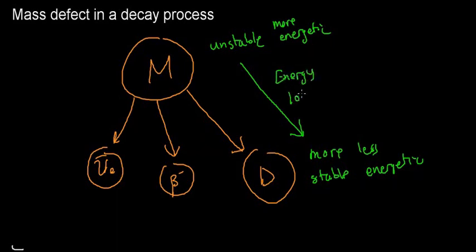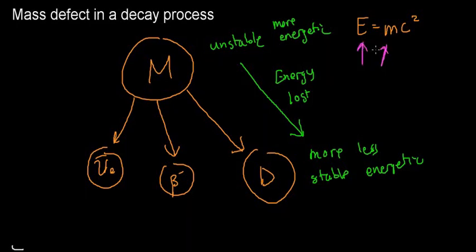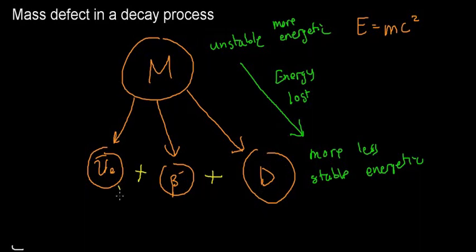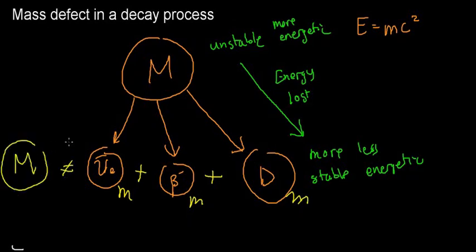In this transition, energy is always lost. Quoting our favorite physicist: there is an equivalency between mass and energy. This means that if I'm losing energy, I must in some form be losing mass. The whole idea of mass defect says: if I take this anti-neutrino, add it to this electron, and add it to this daughter nucleus — if I add up all the masses of these three constituents — I'm not going to get the mass of the mother nucleus. Some mass will be missing, and that is the mass defect.